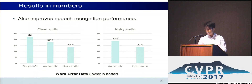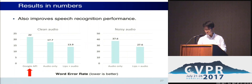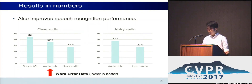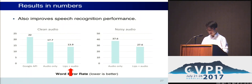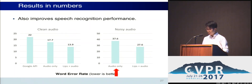With audio, visual cues really help to improve performance, just as they help humans. Google Cloud Speech API gets 22% of the words wrong, whereas our audio-only model gets 17.7% wrong trained on our dataset. The audio and lips model gets 13.9% wrong, which represents a significant improvement. Although the audio-only model performs substantially worse with noise at 37%, the performance boost from adding lips is more visible in noisy conditions.